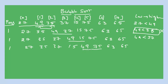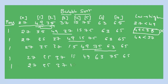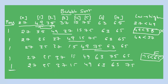Compare 75 and 63 — condition is false, so swap: 63 and 75. Then compare 75 and 65 — condition is false, so swap: 65 and 75. After the first pass, the array is: 27, 35, 37, 15, 49, 63, 65, 75. The first pass is now complete. After completion of the first pass, one element — the last element, 75 — is in sorted order.